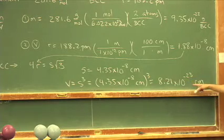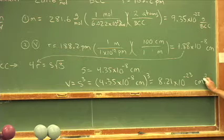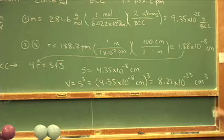The number gets cubed, 8.21 times 10 to the negative 23rd, and the centimeters get cubed as well. So our units are one of volume, centimeters cubed.